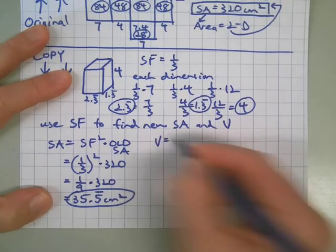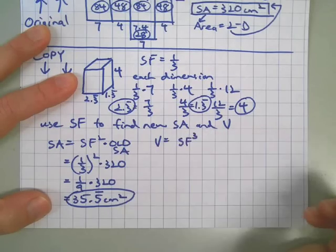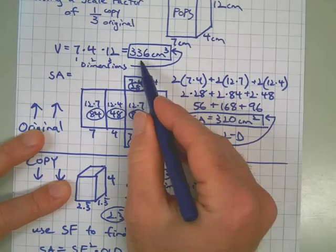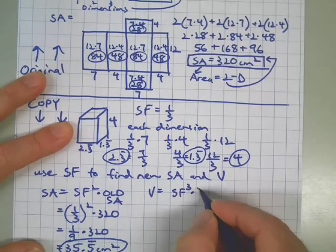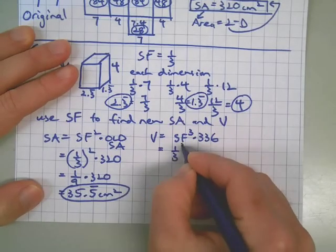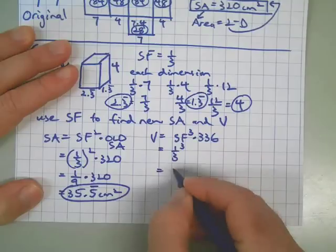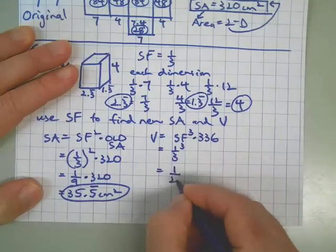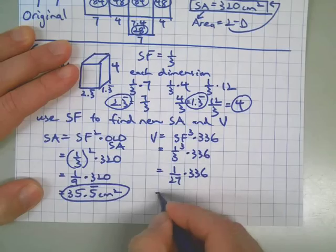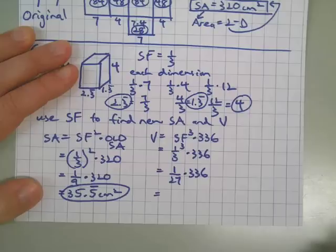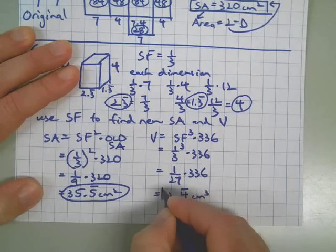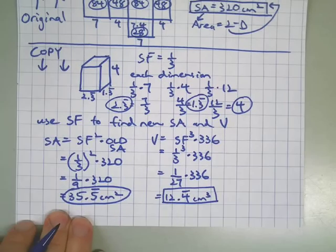Let's do the volume. We're going to take the scale factor cubed, because it's a 3D object. We're going to multiply it by the old volume, which if I look up here, 336 was the old volume. Scale factor cubed means one times one times one on top. Three times three times three is 27 on the bottom. All of that is times the old volume. And that gives us 12.4 repeating cubic centimeters of volume for the new shape.